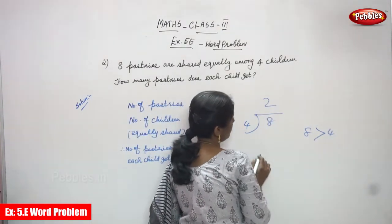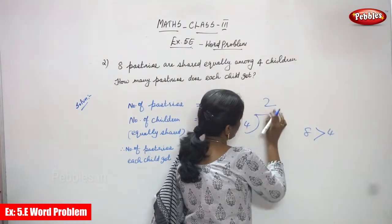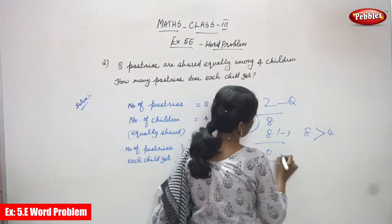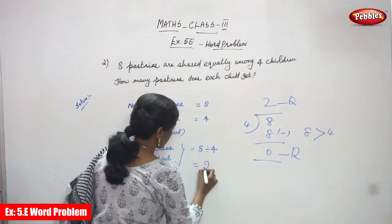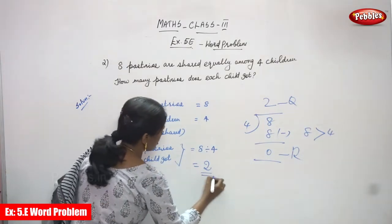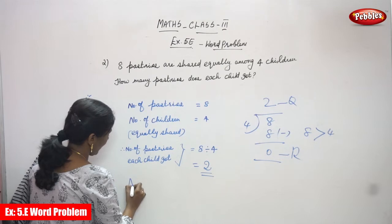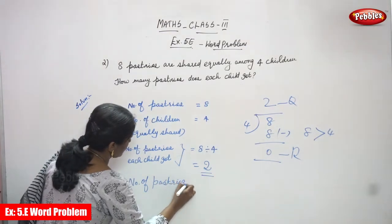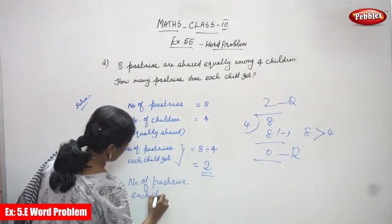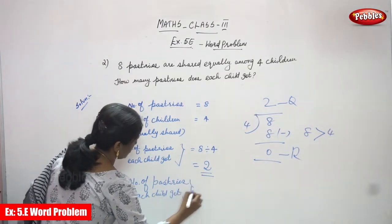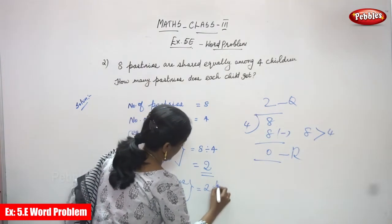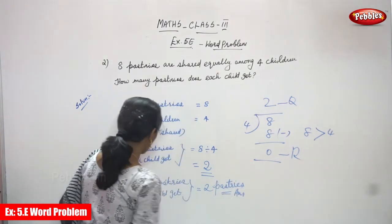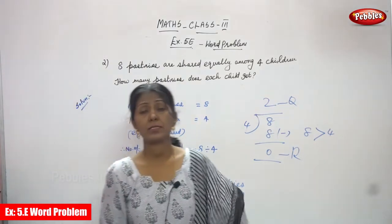You must write the 2 on the top. This is called the quotient. 4 times 2 is 8. 8 minus 8, you get 0. This is the quotient and this is the remainder. So the answer is 2. The number of pastries each child gets is 2 pastries. This is the right answer for the question.